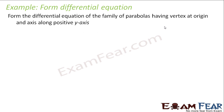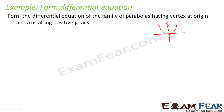So we are looking for a parabola of this form, because it says vertex at origin and axis along positive y-axis. This kind of equation is x² = 4ay. There is only one constant here, so we know we have to differentiate it only once.